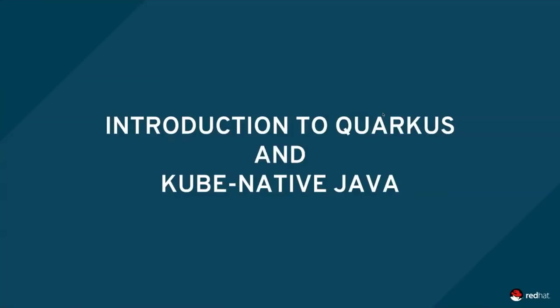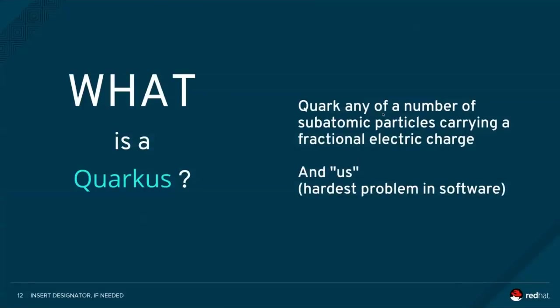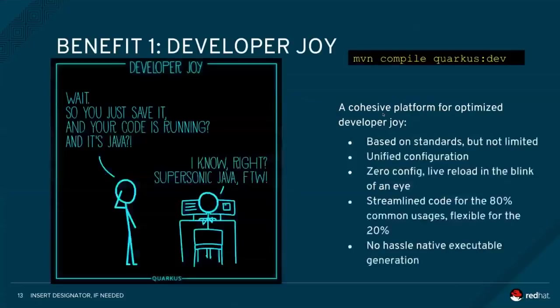That leads us to an introduction of what Quarkus is and what Kubernetes-native Java means. First, the name: a quark is any number of subatomic particles carrying fractional electric charges. And 'us' in terms of developers is the hardest problem to solve in software, because collaboration is harder than anything else. The first benefit of Quarkus is developer joy — building and developing on Quarkus is fun and extremely easy, with live reload making it easy to get up and running with changes immediately reflected.